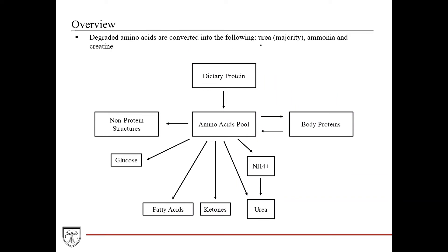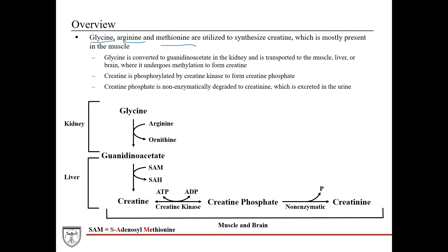Degraded amino acids are converted into urea (the majority), ammonia, and creatine. Glycine, arginine, and methionine are utilized to synthesize creatine, which is mostly present in muscle — the same molecule as the creatine supplement used for working out and improving sport performance. Glycine combines with arginine to form guanidinoacetate within the kidney, which is then transported to the muscle, liver, or brain where it undergoes methylation by SAM (S-adenosylmethionine) to form creatine. SAM is a methyl donor, and in this case donating a methyl group yields creatine.